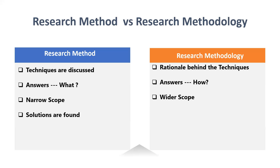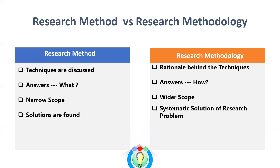Research method finds solutions to simply what is what — meaning what we are going to achieve from these procedures. Coming to research methodology, it gives us the systematic approach or solution to the research problem and research question that has already been framed in the research work, meaning a systematic process to identify the solution.